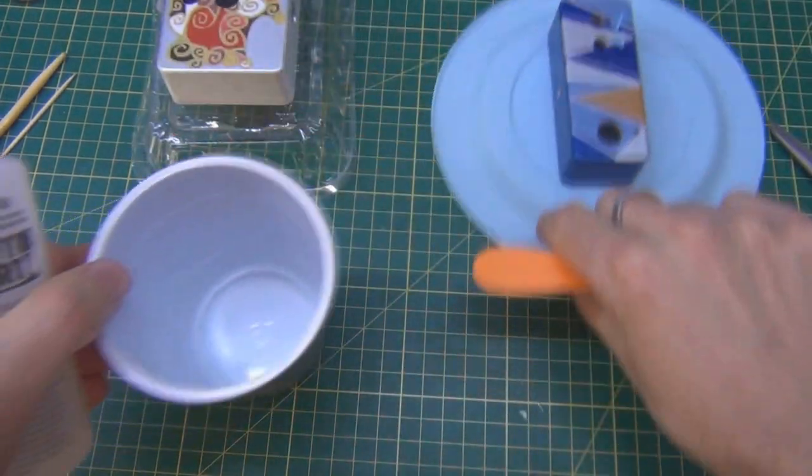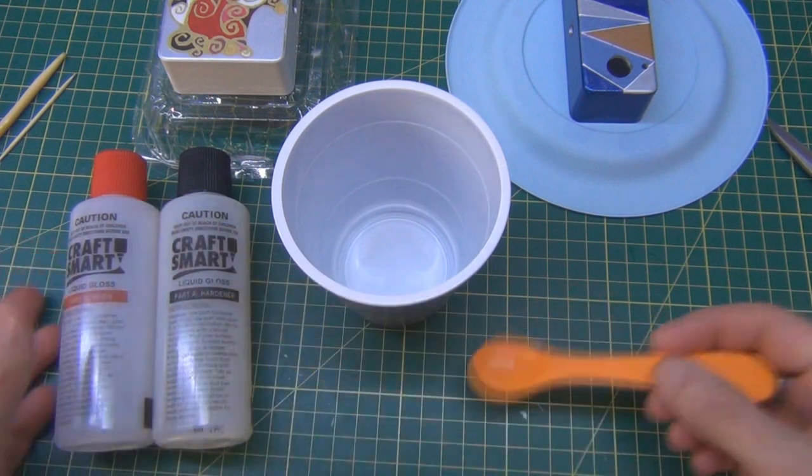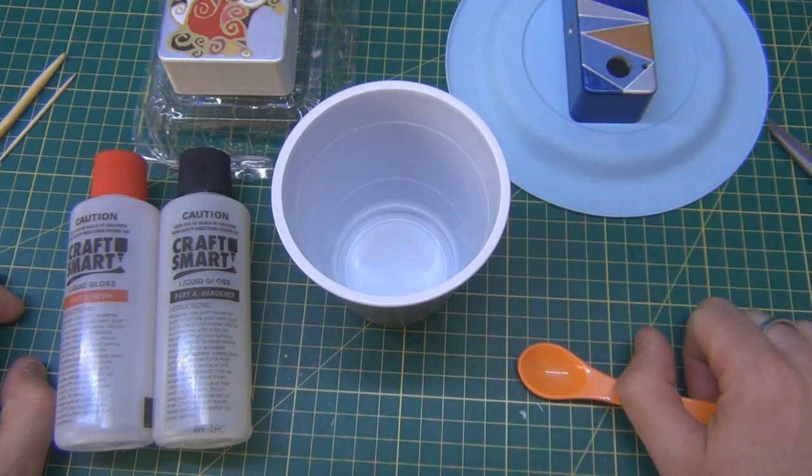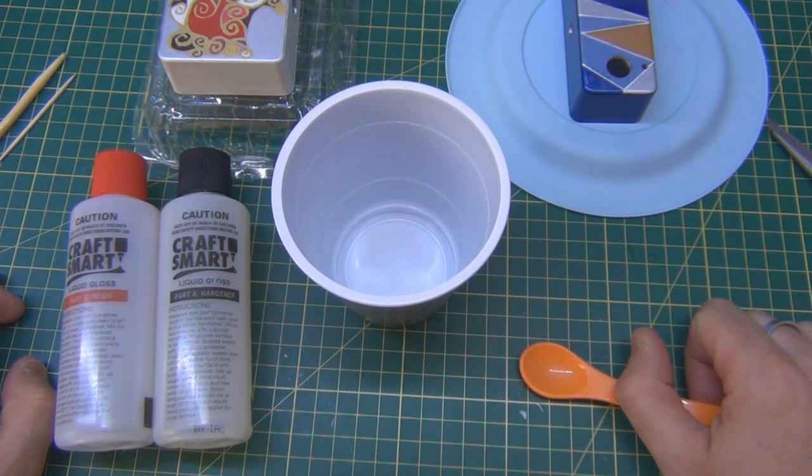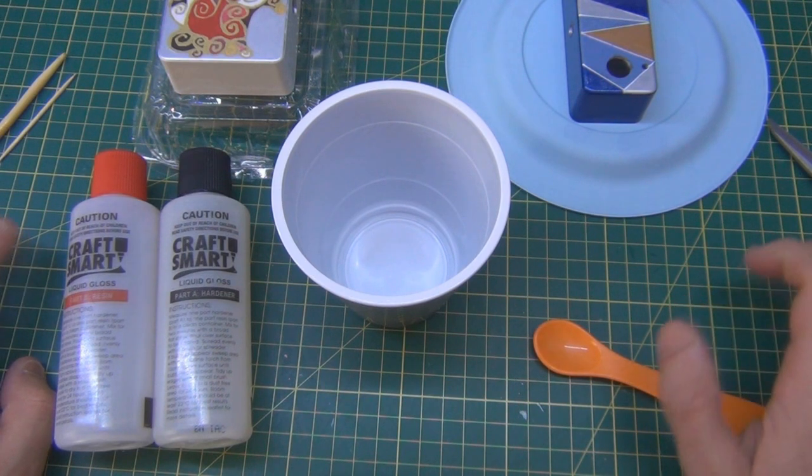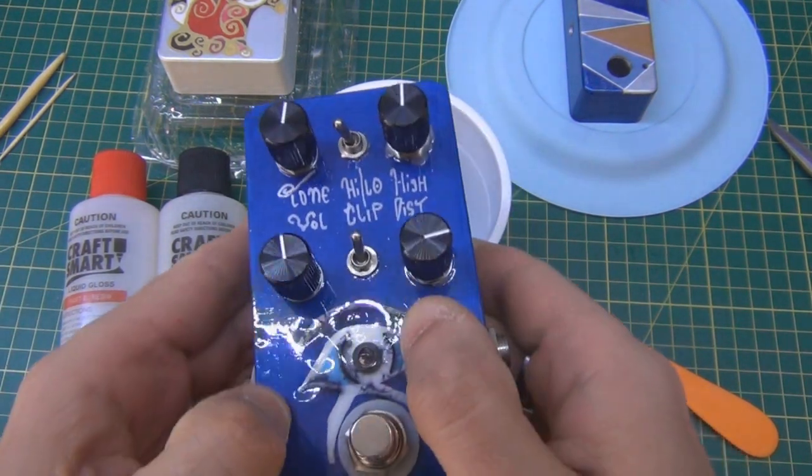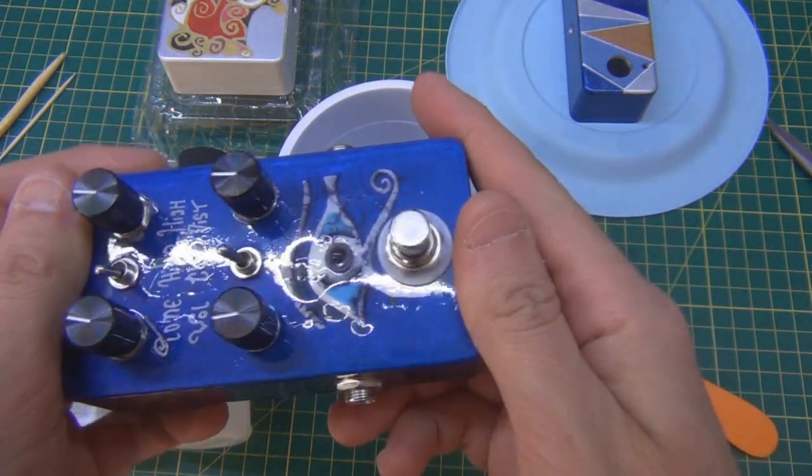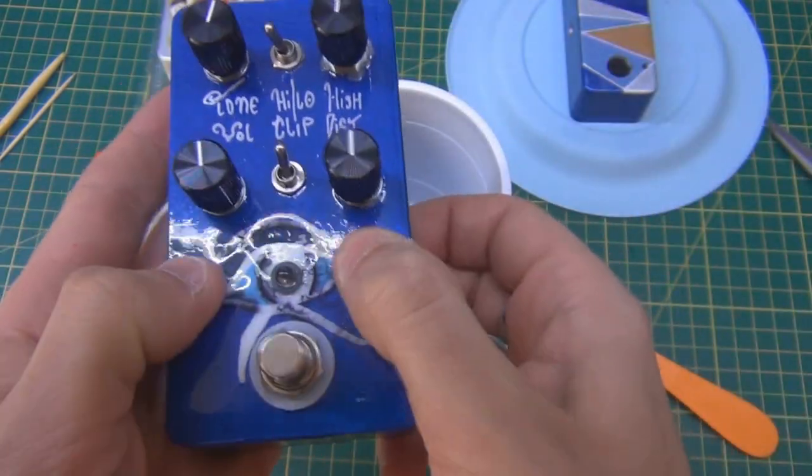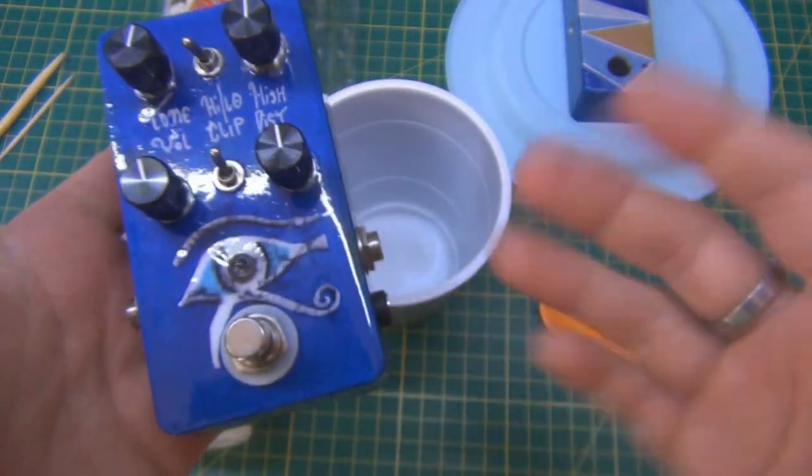So you've just got to mix one part of each, one part resin, one part hardener. And you need to do this relatively accurately, otherwise it will take a very long time to set. If you do stuff it up, and your epoxy job's not setting, leave it in the sun, because apparently the UV from the sun will accelerate the hardening process. And that's actually what happened with one of my pedals. It was soft for so long, but it did end up hardening. It's hard as a rock now.